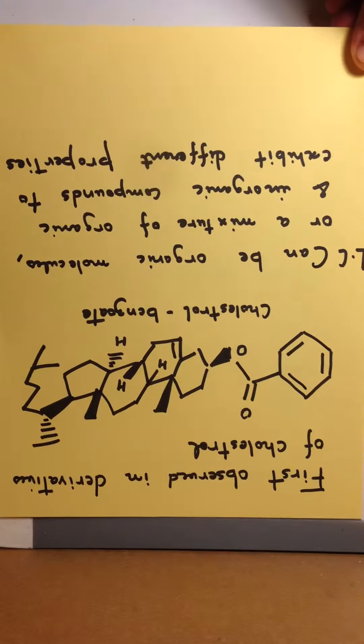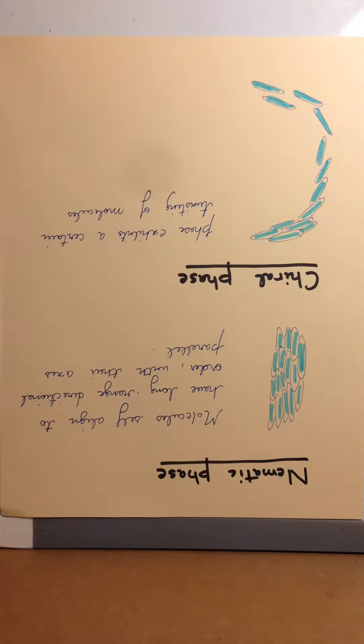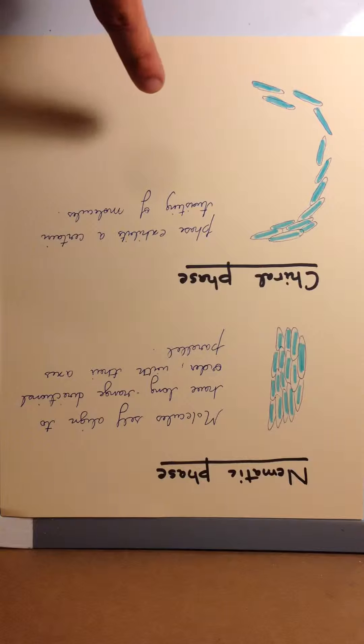Liquid crystals have two basic phases: nematic phases and chiral phases. Nematic phases consist of molecules which self-align to have a long-range directional order with their axes parallel.